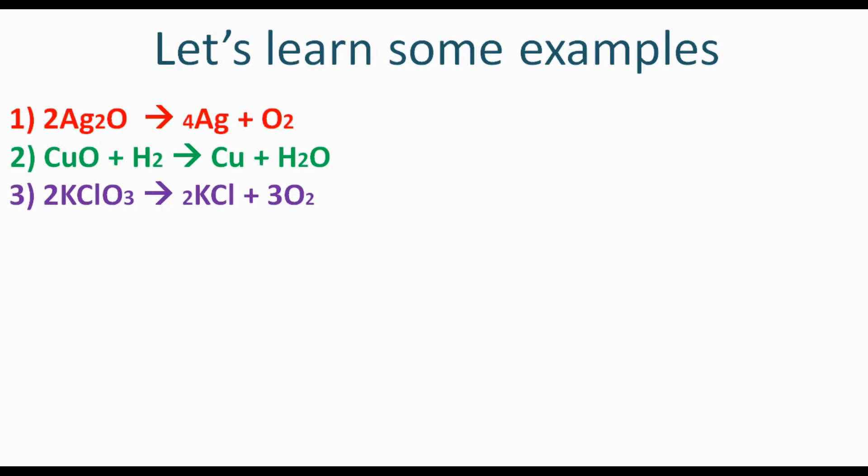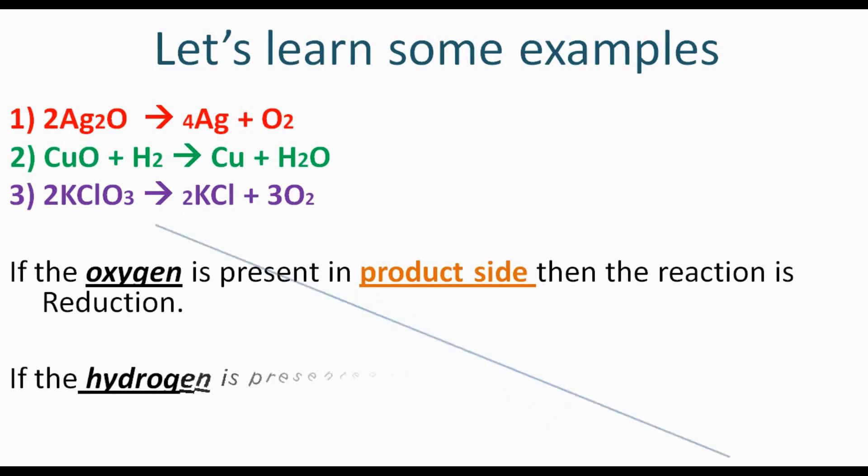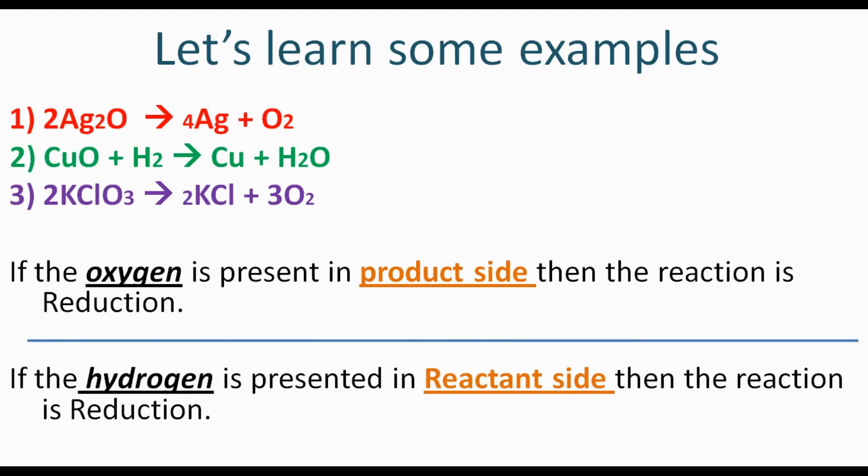Did you notice? If oxygen is present on the product side, then the reaction is reduction. There is another possibility: if hydrogen is present on the reactant side, then the reaction is reduction. So there are two possibilities for reduction: oxygen in the product side, or hydrogen in the reactant side. This is the opposite of the oxidation reaction.